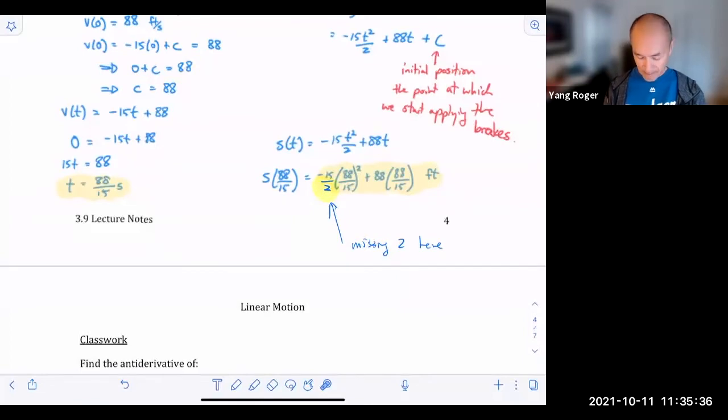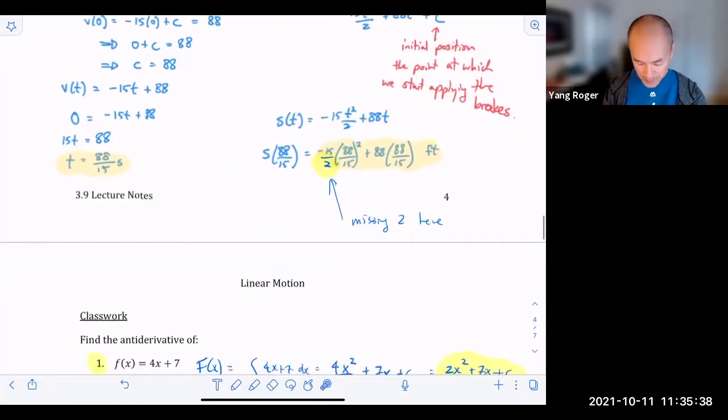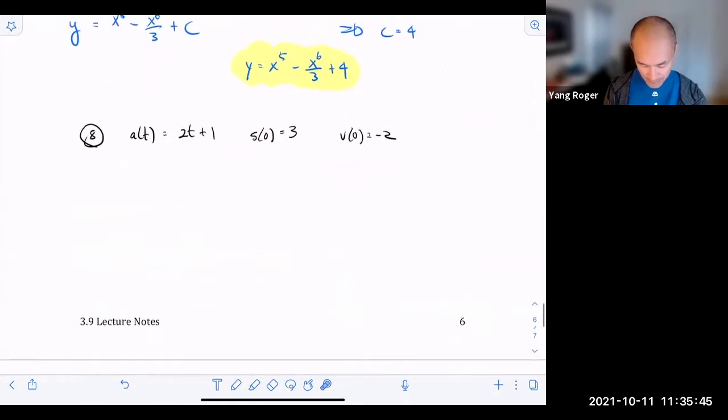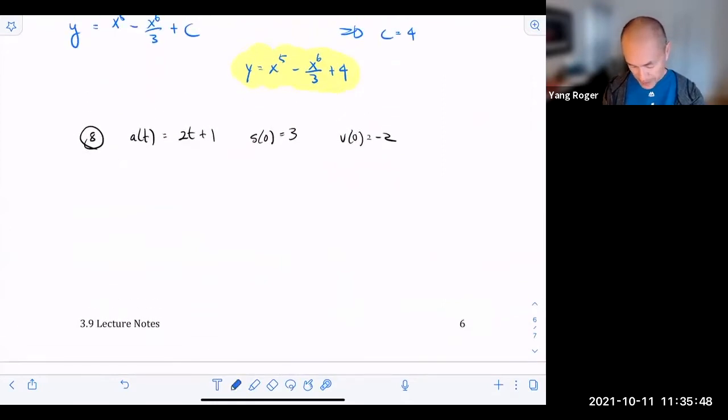And I wanted to look at an example where I created a classwork here. So I created this classwork eight. And what do we want to find? I want you to find what's the velocity function, what's the position function. Now we're going to have plus C's, but they give us an initial value for the velocity and they give us an initial value for the position. So I want you guys to try number eight. Let me know when you finish that.